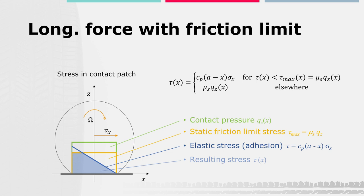As a next step, we consider that there is a friction limit in the contact patch, given by the maximum static coefficient of friction mu_s. The local stress tau in the contact patch is now defined as a function of x. We separate into two areas. In the area where the elastic stress due to adhesion is below or equal to the static friction limit stress tau_max, the local stress tau is given by Cp times longitudinal slip sigma_x times the parenthesis (A minus x).